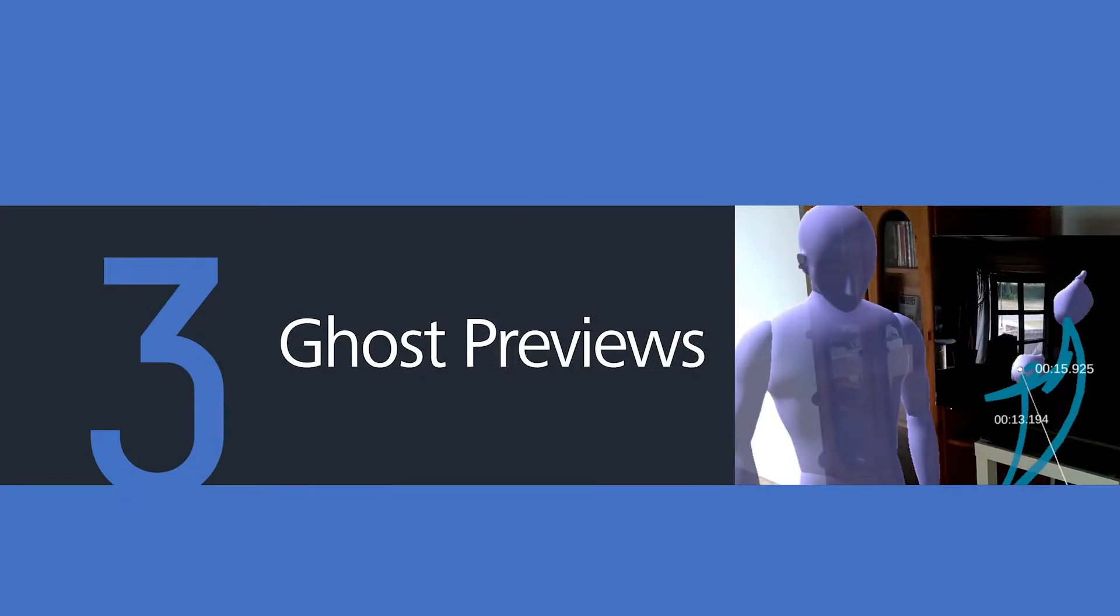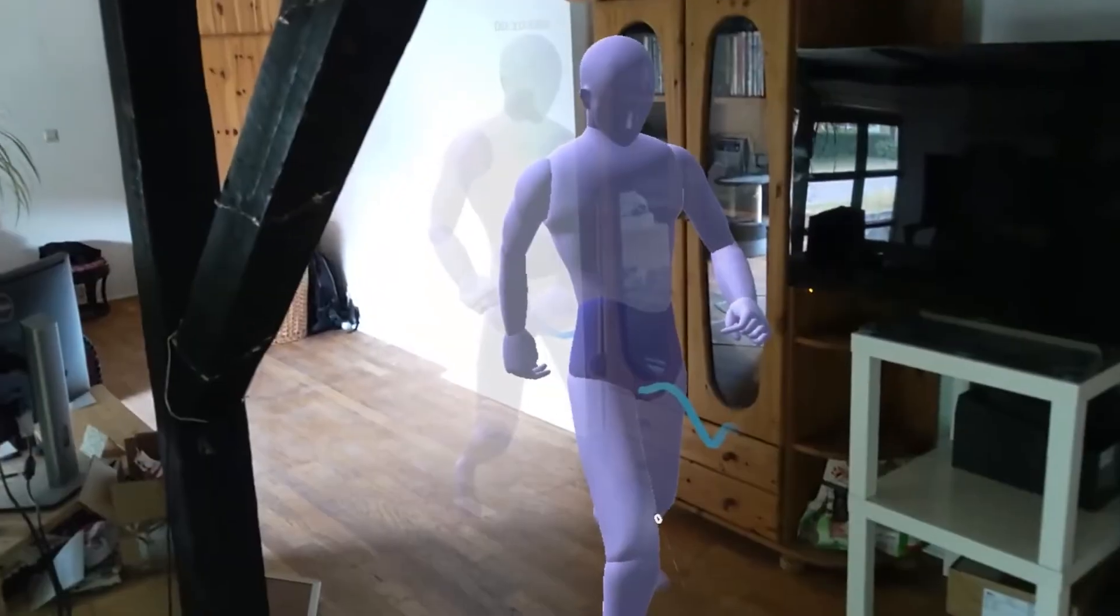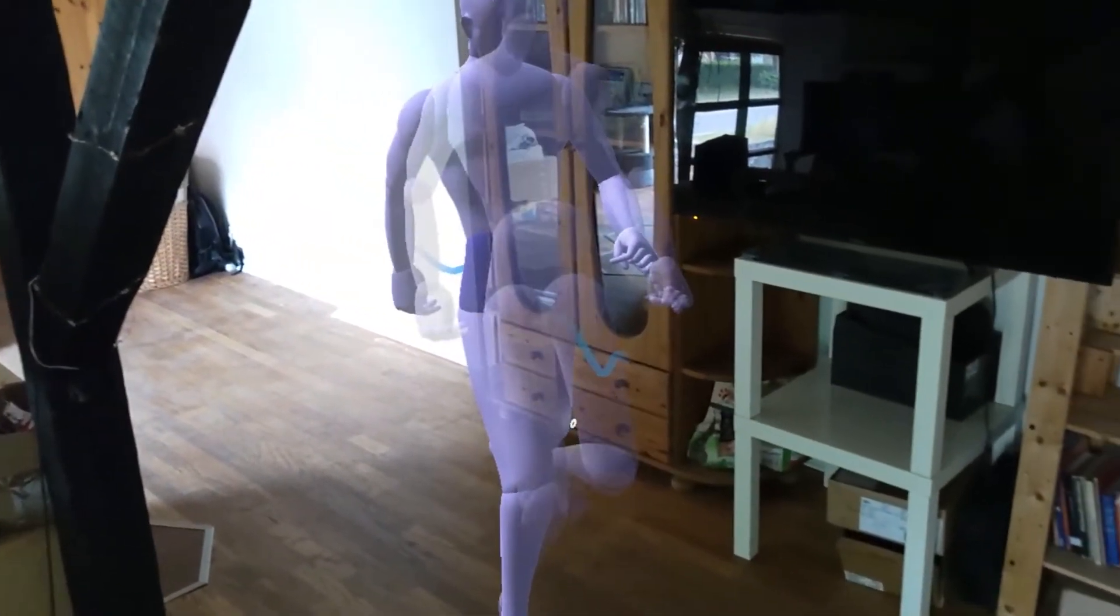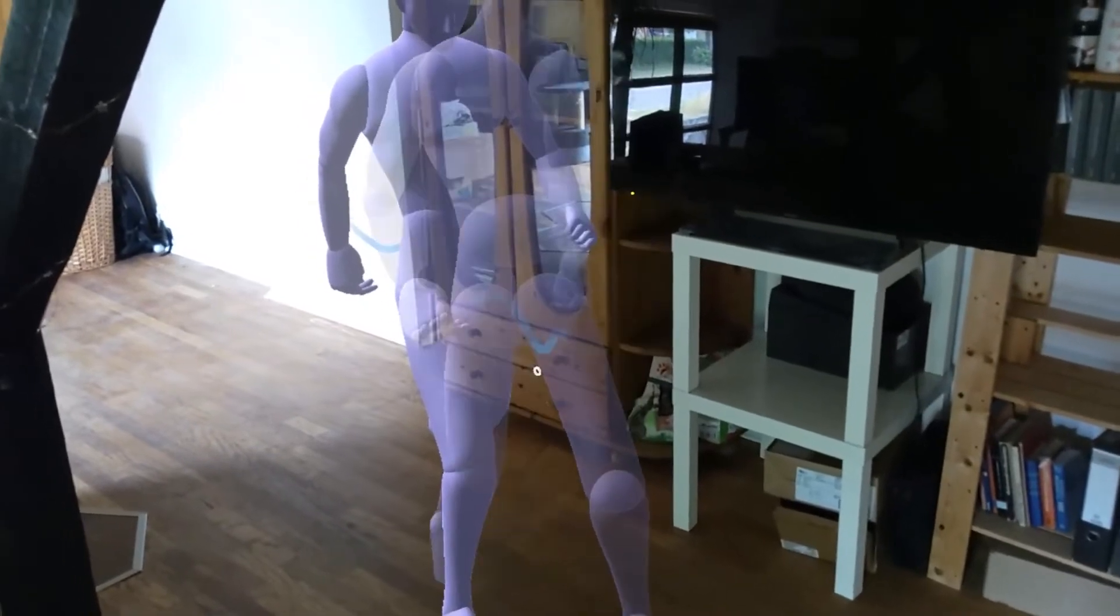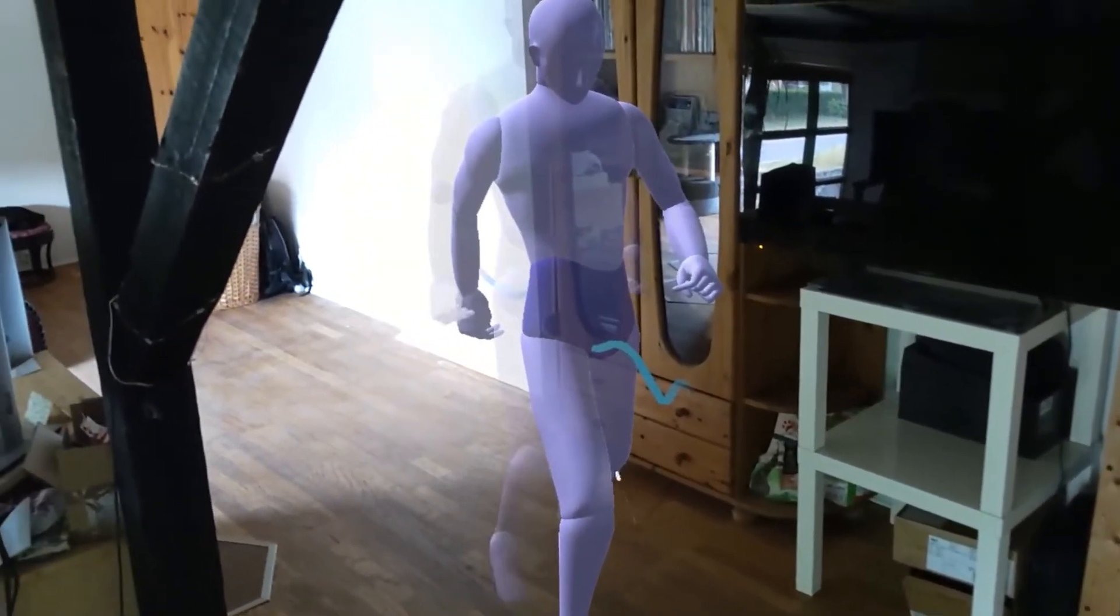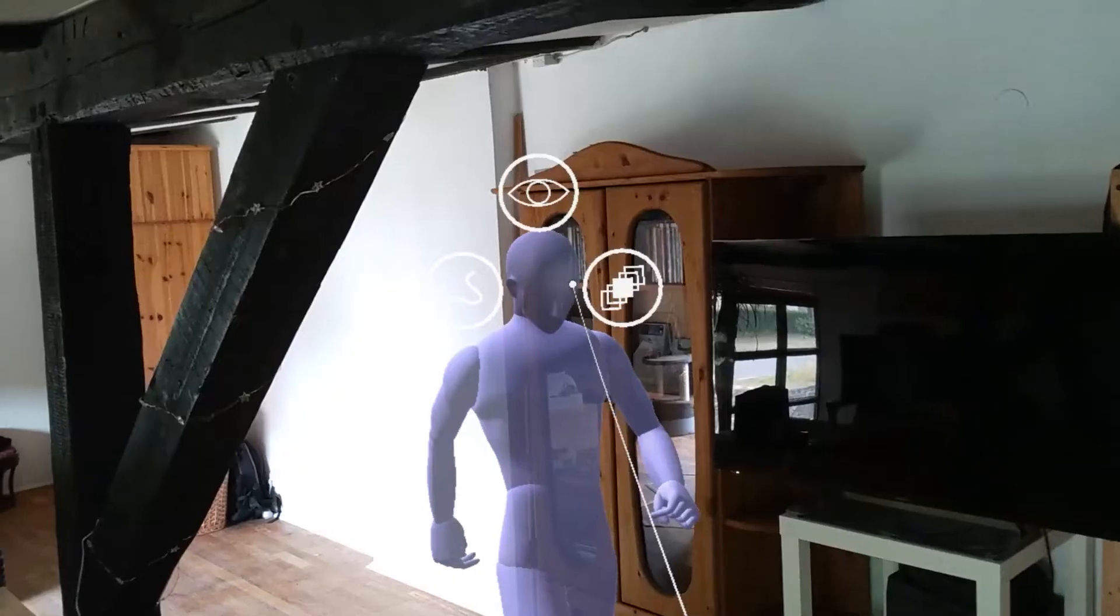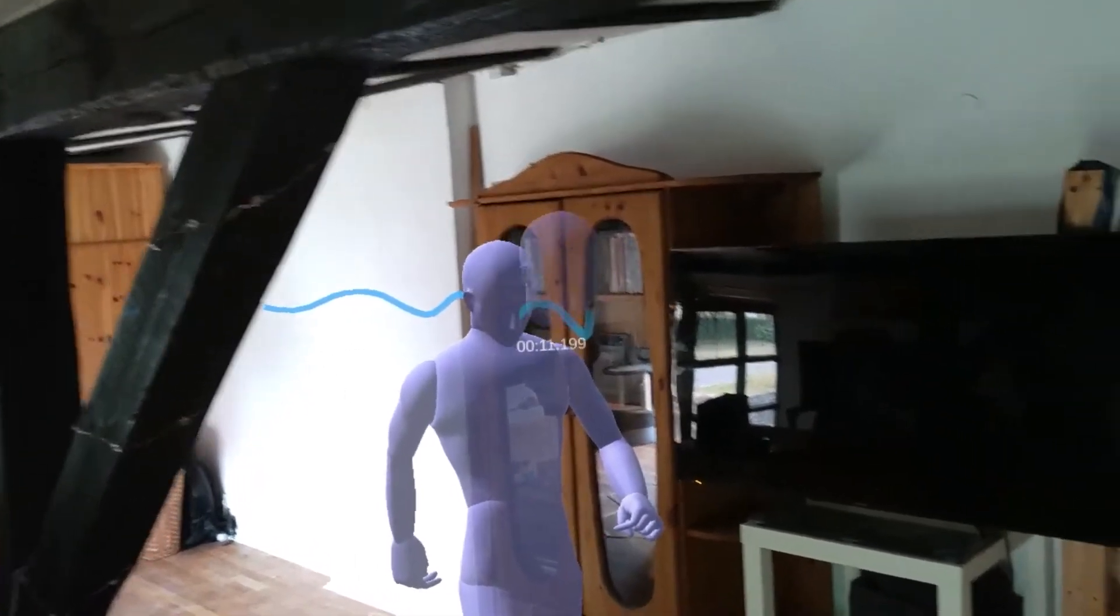Ghost previews. To provide a mechanism to assess and compare posture changes over time, we develop the ghost trajectory. When a user looks at a point along the trajectory, a semi-transparent representation of the avatar's posture at that time is shown.